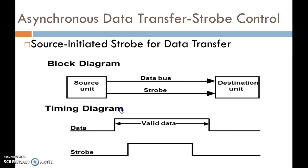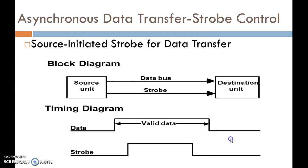The timing diagram for these two signals is as follows. First, data is put on the data bus, so the first signal is data and it is active — valid data is present between these two lines. After placing the data on the data bus, the source unit generates the Strobe signal. The Strobe signal starts and remains active as long as the data is on the data bus.